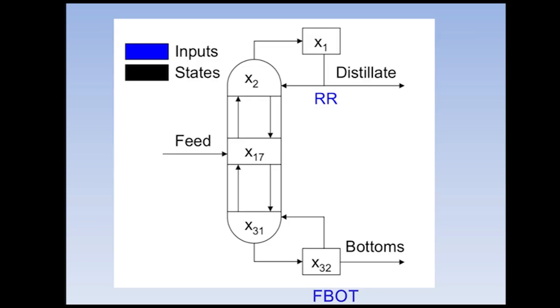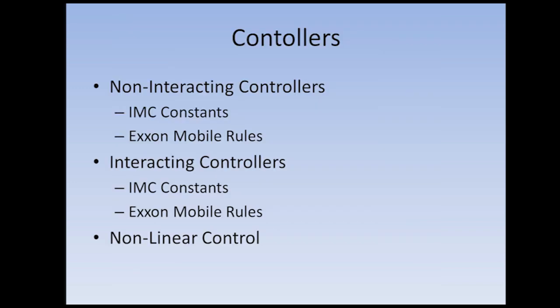So here we have a diagram of the distillation column model that we were using. We ran a few step tests on our distillation column to find some different tuning constants for our controller. We would change the reflux ratio and measure the distillate change, the fraction of the feed going through the bottoms and the bottoms change, as well as the feed as a disturbance and measure how it affected both of those. Once we had our Kp, ThetaP, and TauP, we would use some rules to turn them into tuning constants.